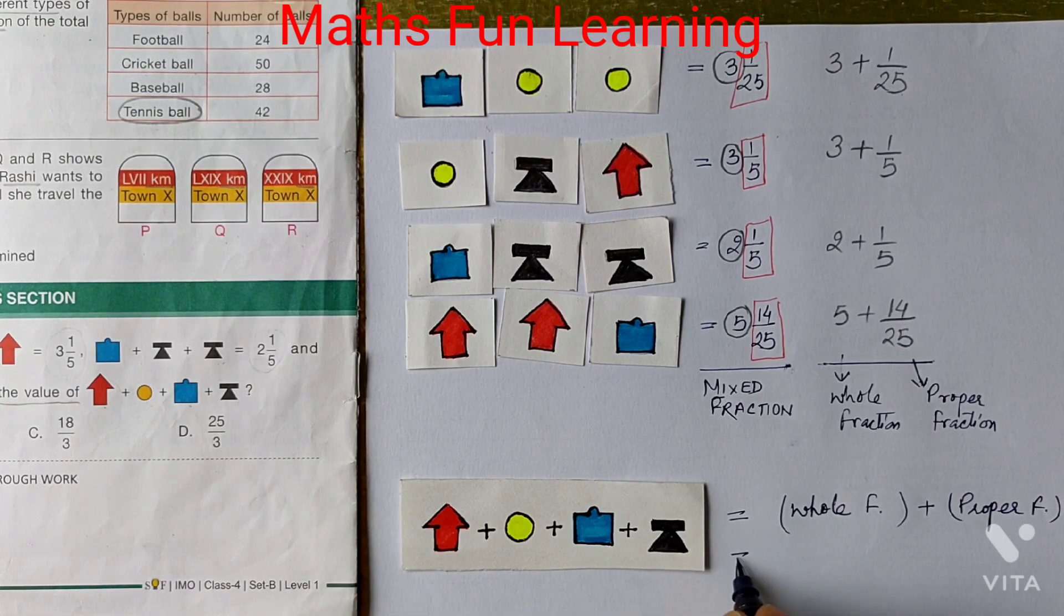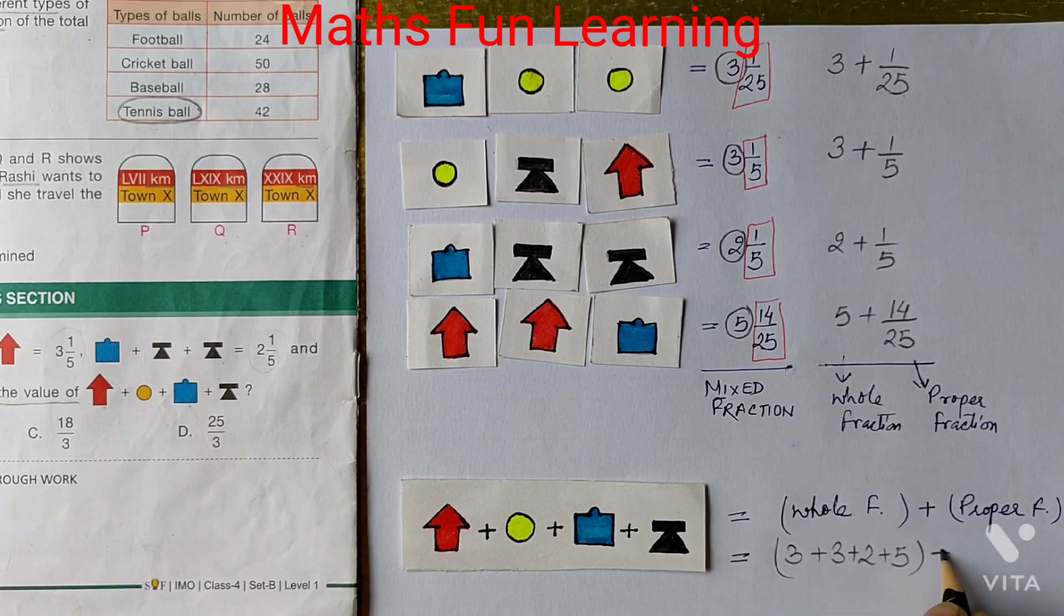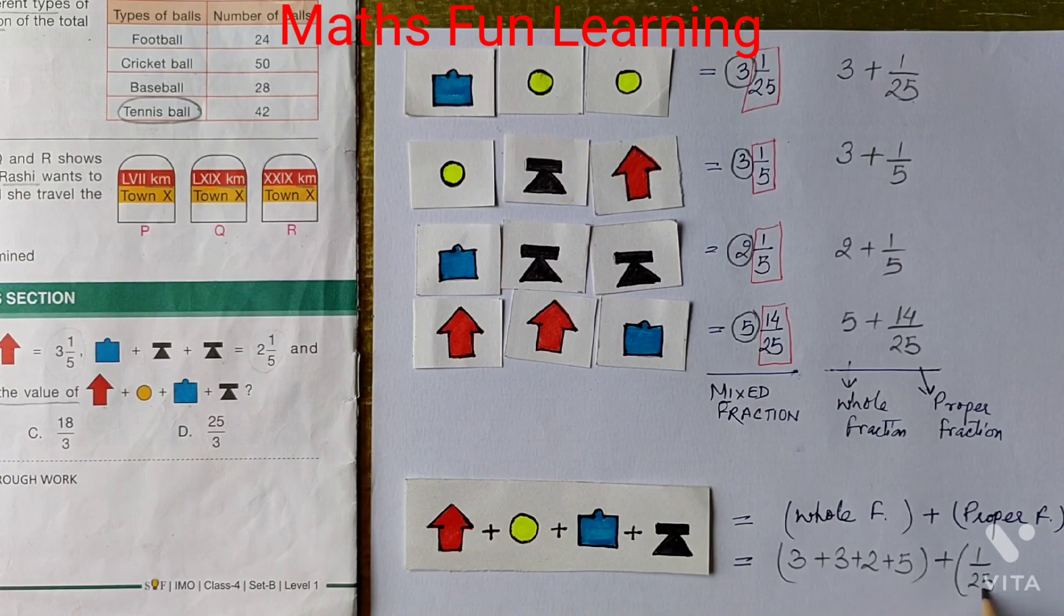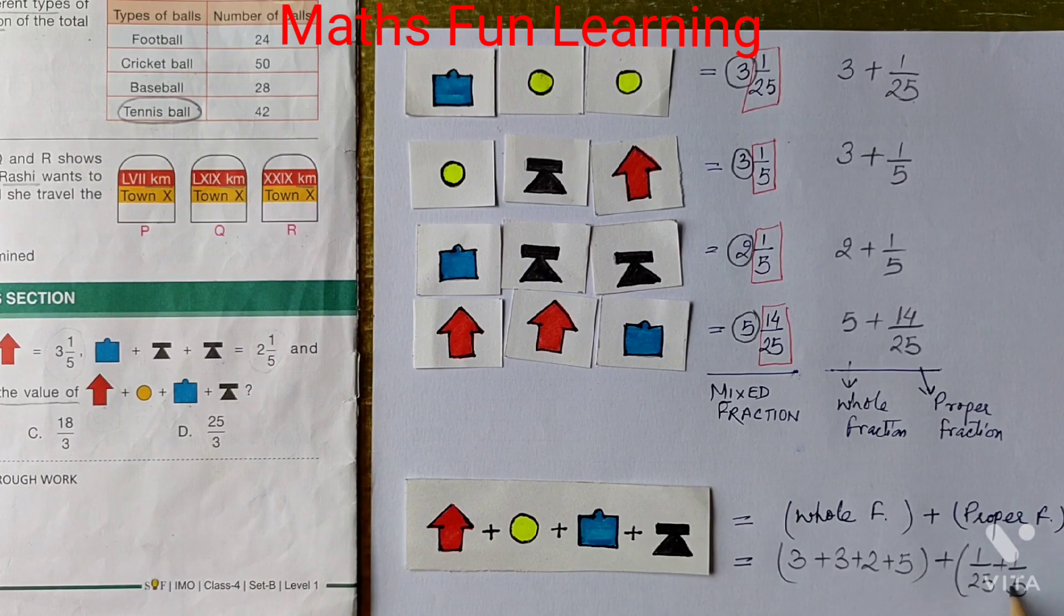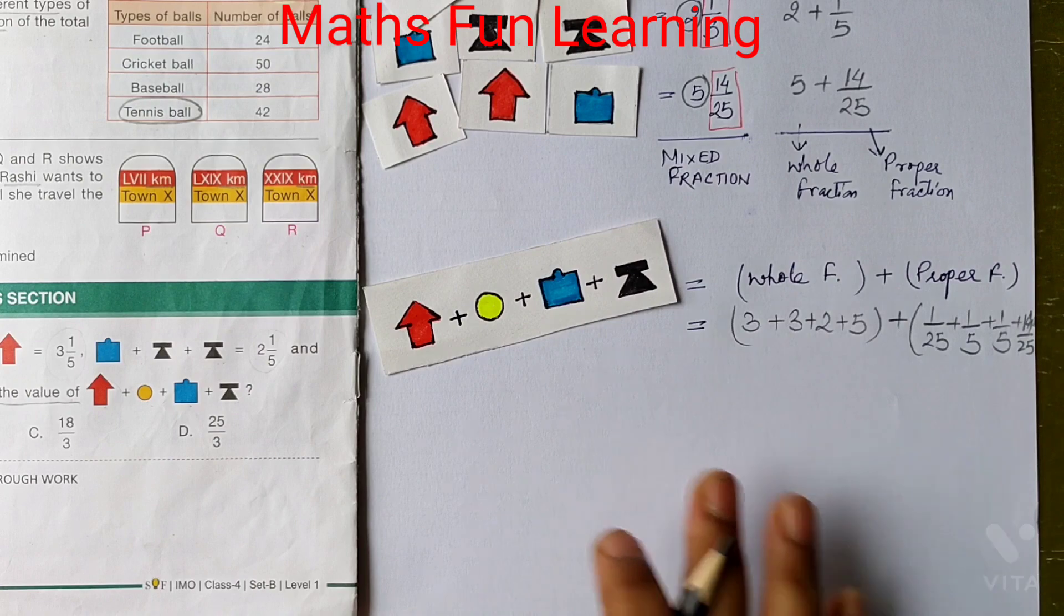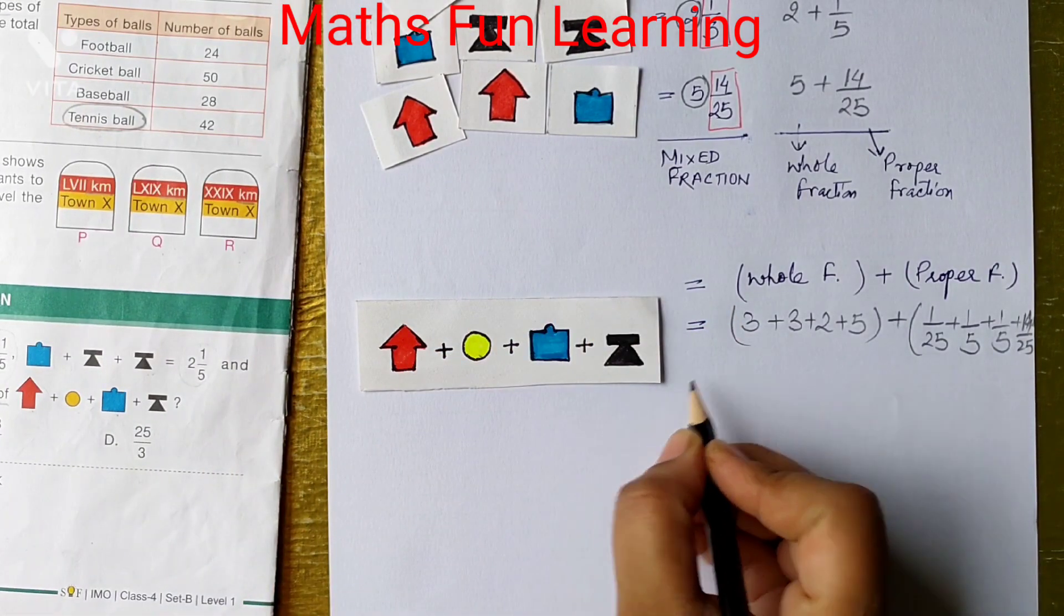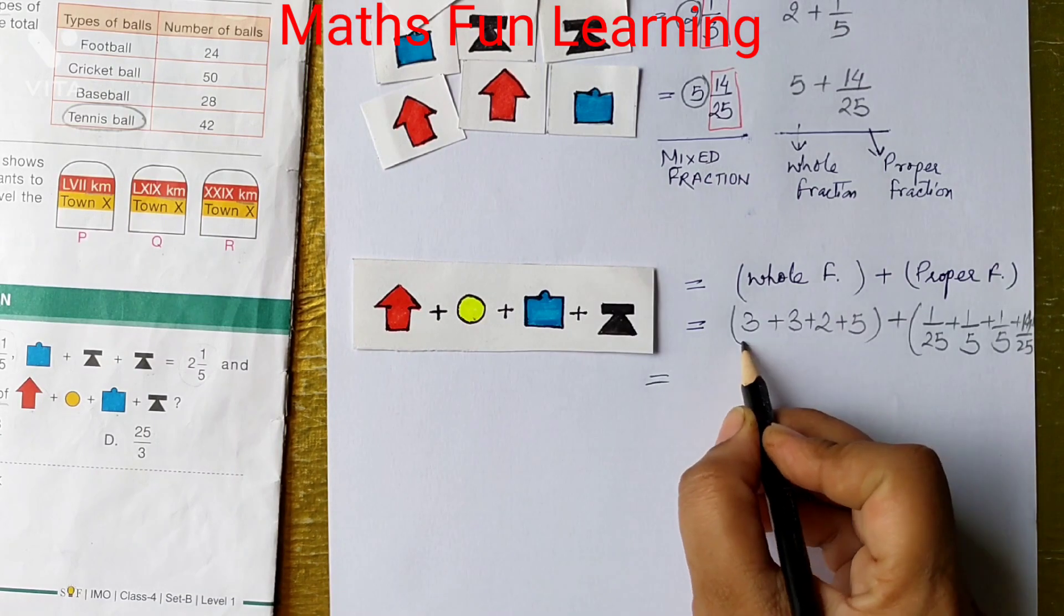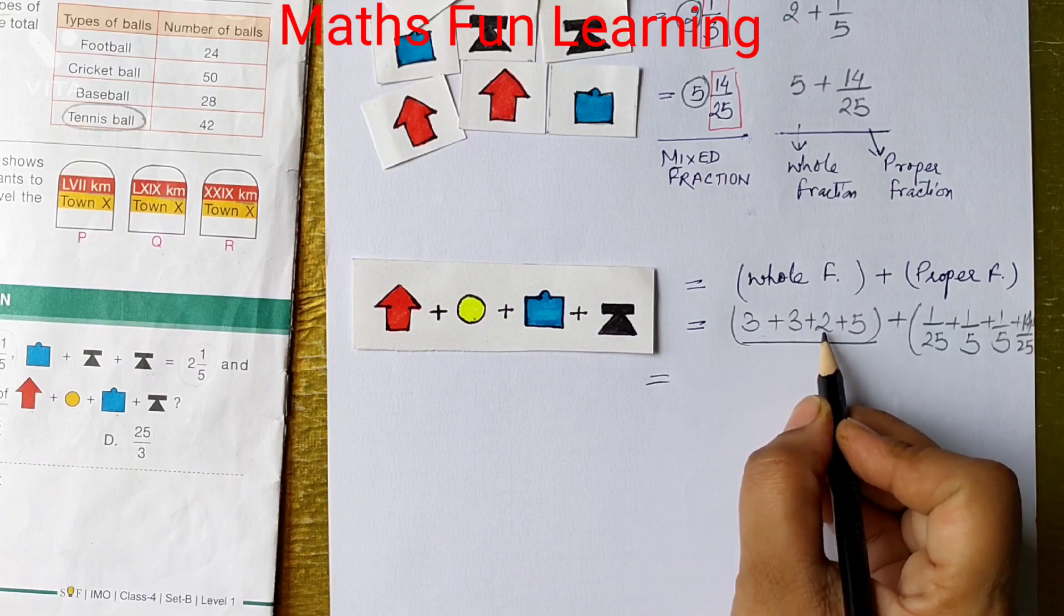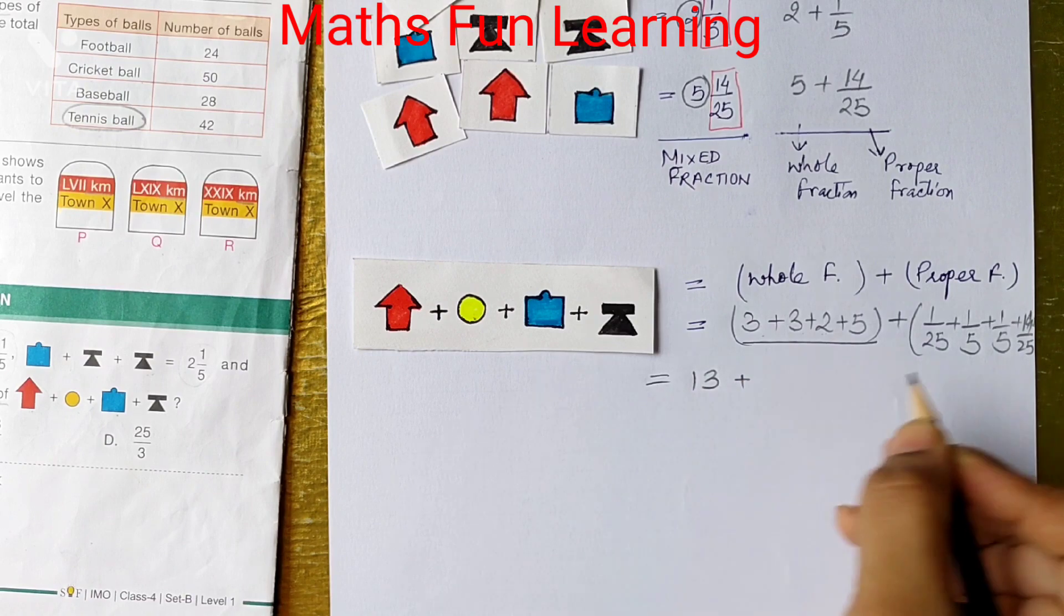So the whole fractions are 3 plus 3 plus 2 plus 5 plus 1 upon 25 plus 1 upon 5, 1 upon 5 plus 14 upon 25. Now what you can do? So here we just added all whole numbers. 3 plus 3 plus 3 plus 3 is 6, 6 plus 2 is 8, 8 plus 5 is 13. Very good.